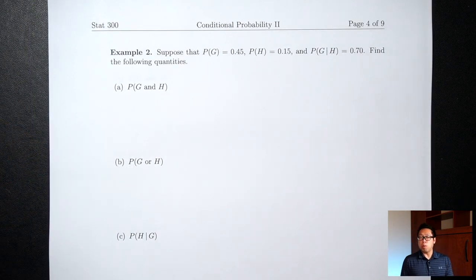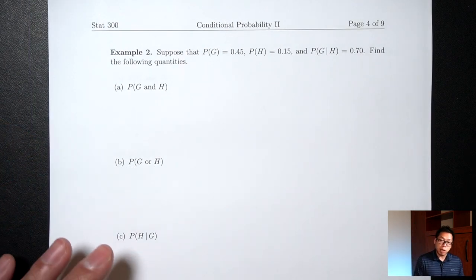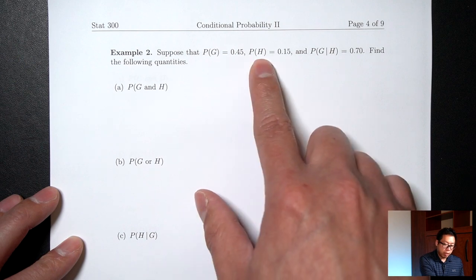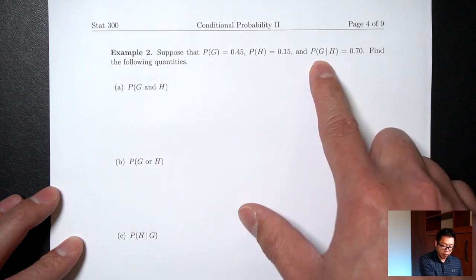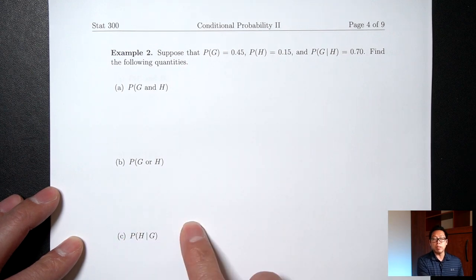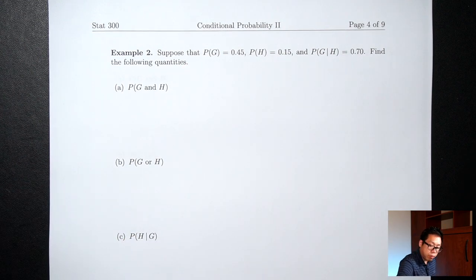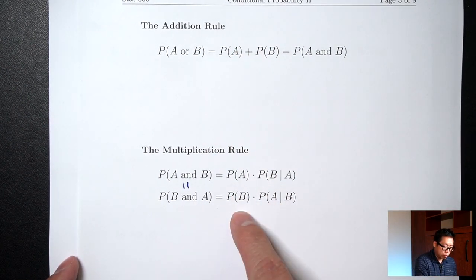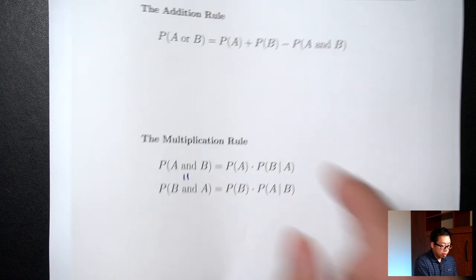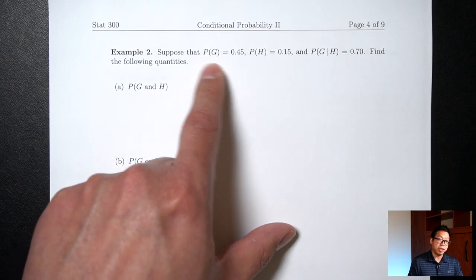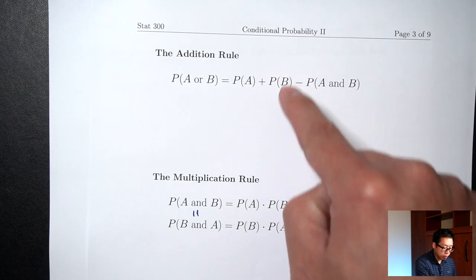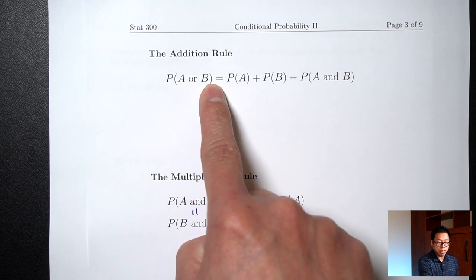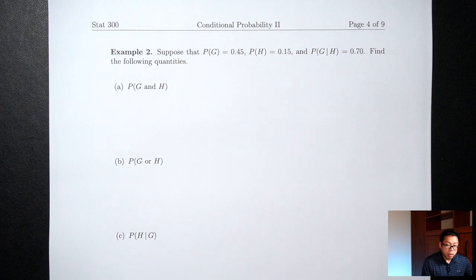When would we use those formulas? We use them when we're not given a table and are just given probabilities. Suppose probability of G is 0.45, probability of H is 0.15, probability of G given H is 0.70. I'll need the formulas, specifically the first three. Since the question uses G's and H's instead of A's and B's, I'm going to rewrite those three formulas replacing A with G and B with H.